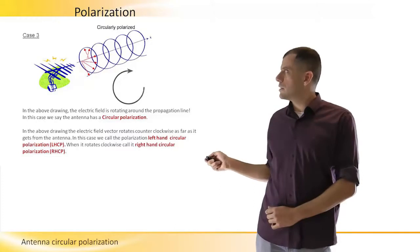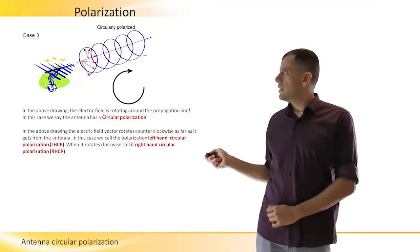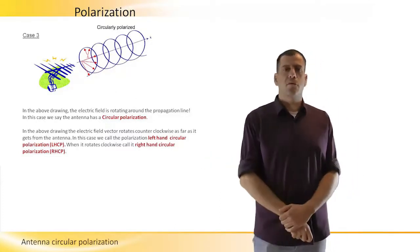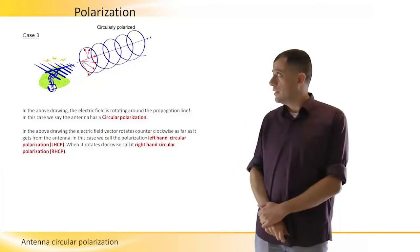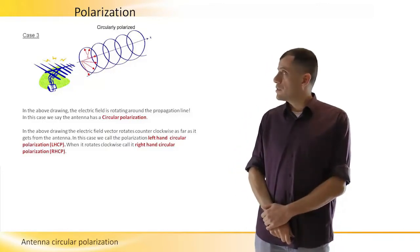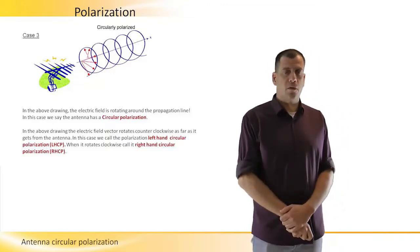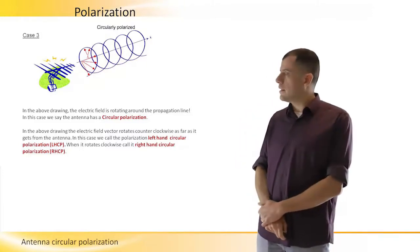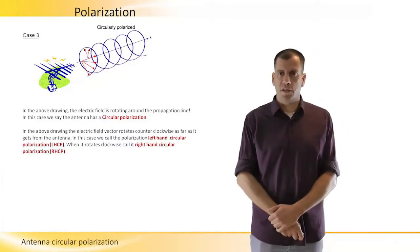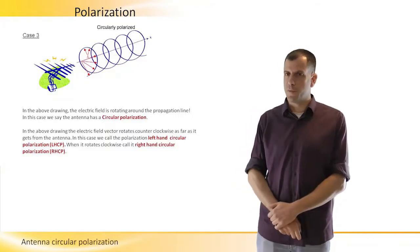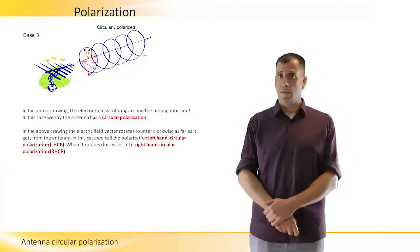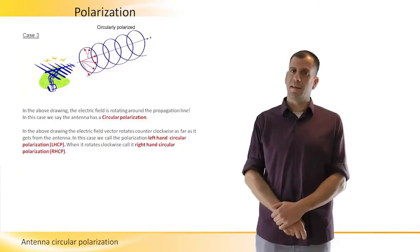If the rotation is clockwise, then we call it right-hand circular polarization. The direction that we are looking is from the antenna towards the propagation direction and not the opposite. This is very important because from the opposite direction, we will see it rotating in the other way.